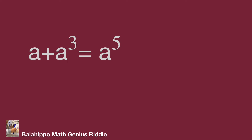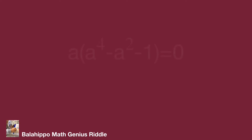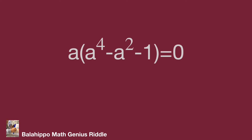The given equation: a plus a cubed equal to a power of 5. For easy operations, move all the items to one side of the equation: a to the power of 5 minus a cubed minus a equal to 0. Move out the common factor a.